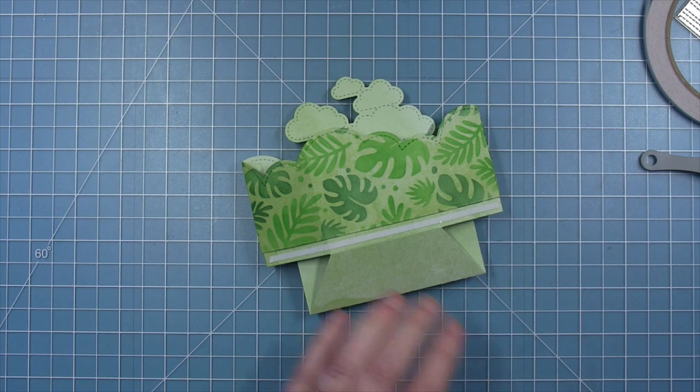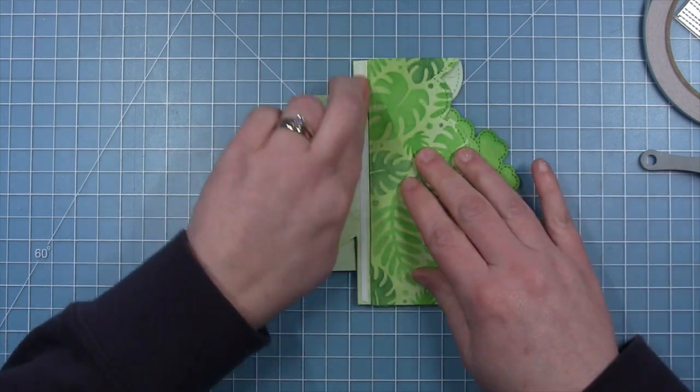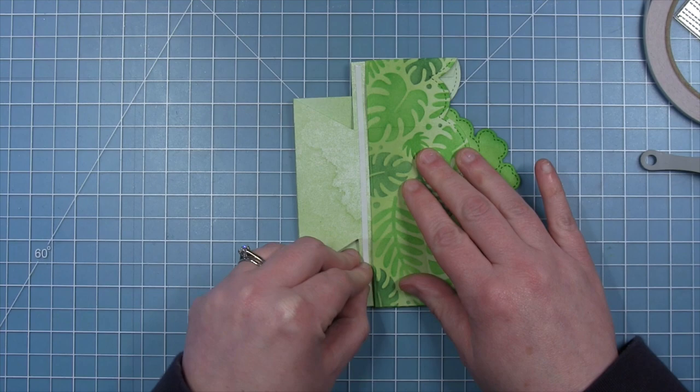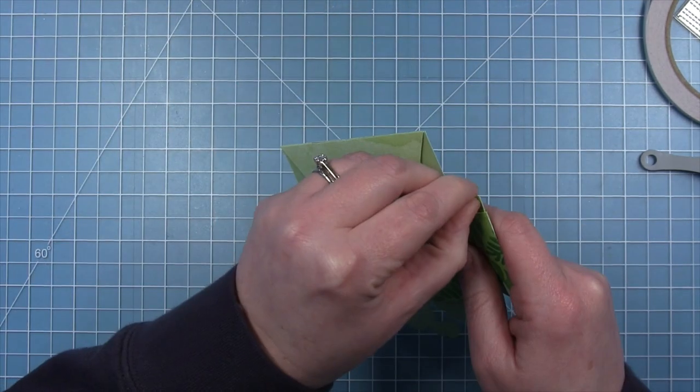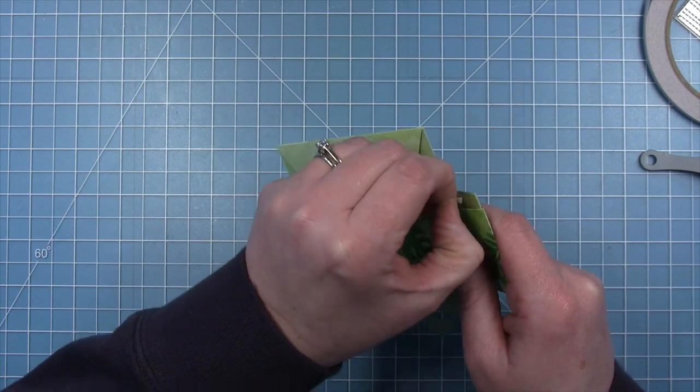Then I can just pull off the liner tape and I can just slide that wraparound down and it will stick to that adhesive on the bottom and be nice and secure.